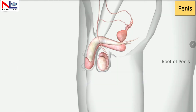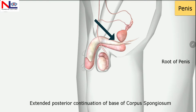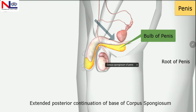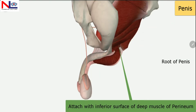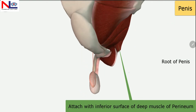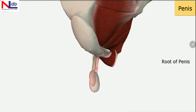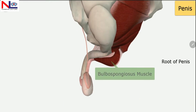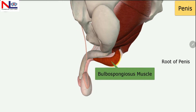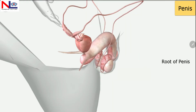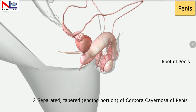The root of the penis is the attached region and it consists of the expanded posterior continuation of the base of the corpus spongiosum, termed the bulb of penis. This is attached to the inferior surface of the deep muscles of the perineum and is enclosed by the bulbospongiosus muscle, which promotes ejaculation.